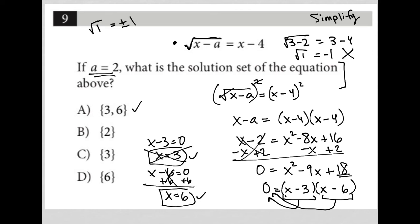When we try 6, we do the exact same thing. The square root of 6 minus 2 is equal to 6 minus 4. The square root of 6 minus 2 is the square root of 4, which is equal to 6 minus 4, which is 2.